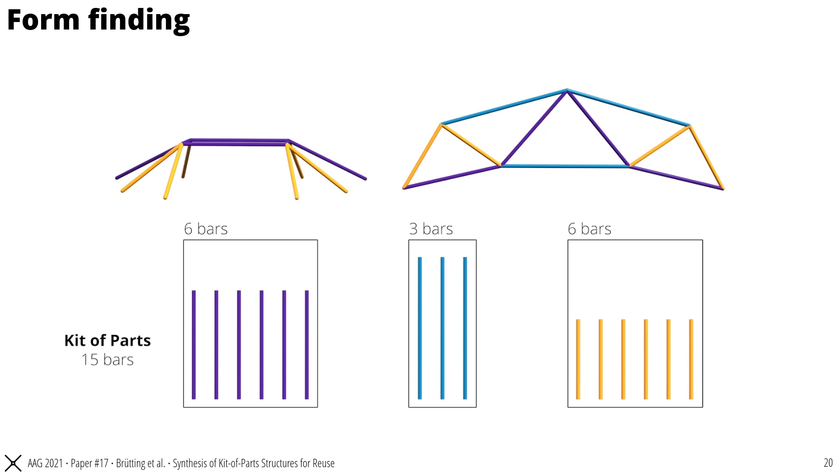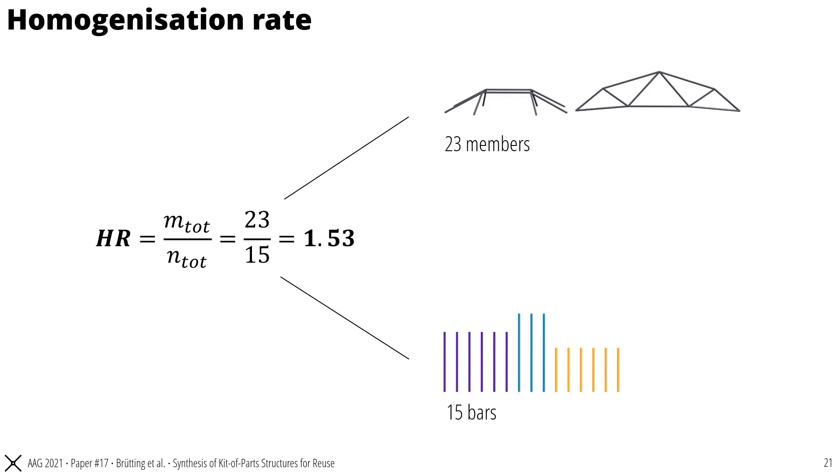But this also means that we only need to produce a subset of bars to build the two structures. Here we only need 15 bars. The quality of a form finding result is therefore measured through a so-called homogenization rate, which is defined by the ratio of the total number of members in all structures over the total number of bars in the kit of parts. Here for this example, the homogenization rate would be 23 over 15. In general, the higher the number the better.